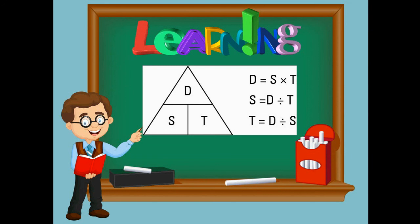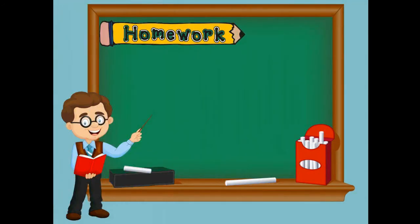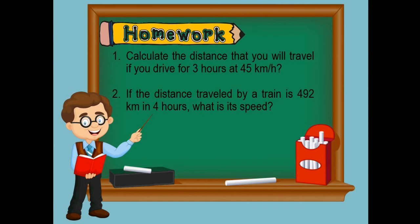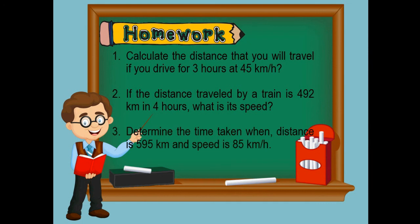Good job, students! This time it's your turn to answer the following questions. Number one: calculate the distance that you will travel if you drive for three hours at 45 kilometers per hour. Number two: if the distance traveled by a train is 492 kilometers in four hours, what is its speed? Number three: determine the time taken when the distance is 595 kilometers and speed is 85 kilometers per hour. Good luck and do your best!